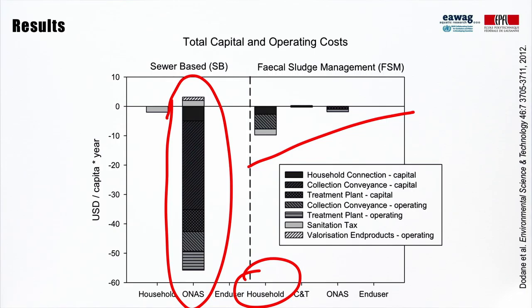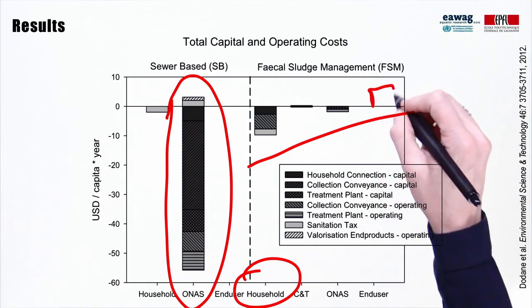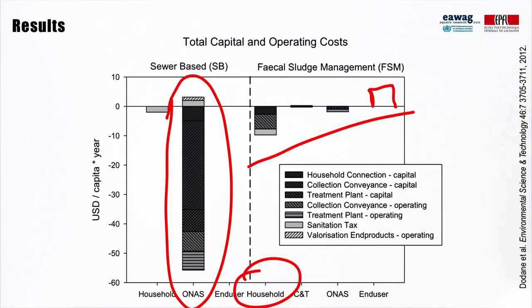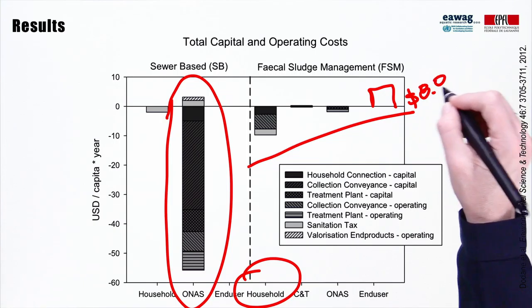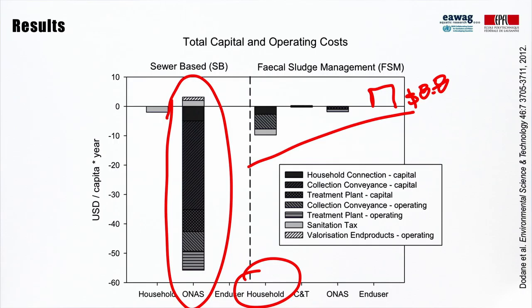This is where it is also interesting to think about how resource recovery options could offset costs. In this model, resource recovery is generating almost no income. What if we could find an option to get $10 for a truckload of 5 cubic meters of fecal sludge? In Dakar, they have 2.2 million cubic meters of fecal sludge produced per year. That would work out as an annualized cost of $8.80 per capita net operating gain, which could significantly affect the financial balance of the fecal sludge management system, making it close to a net zero total cost — and potentially reduce the financial burden on poor households.